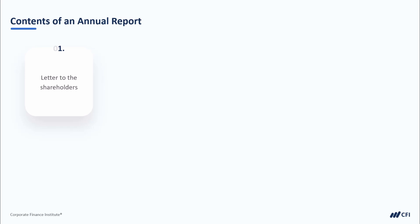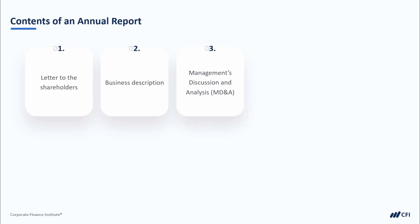Typically, we'll start with a letter to the shareholders, and that will be followed by a business description — a very powerful section to read. If you don't really understand the nature of the business, this is where that will be described. This is then followed by a lengthy management discussion and analysis, filled with tons of information in terms of operational insights, financial insights, and even some strategic insights about where the business is going.